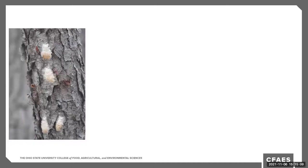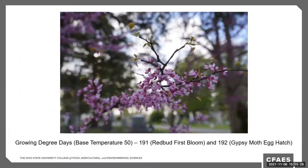Let's begin by talking about the egg mass stage, which is the stage the insect spends most of its time in. It overwinters in this stage, so right now this is what you would be looking for. In the spring, at the same time that red buds first begin to bloom, that should be the light bulb moment that if gypsy moth is here, caterpillars will begin to hatch from those egg masses. We use growing degree days — the red bud first bloom is at 191 GDD, and gypsy moth egg hatch is at 192, so they are correlated very closely.